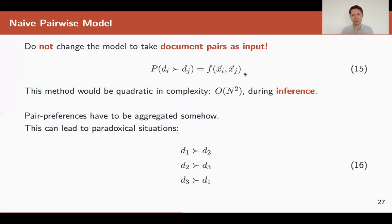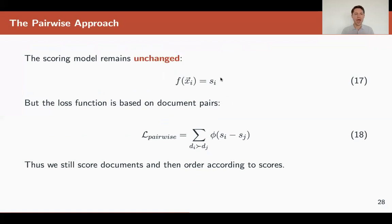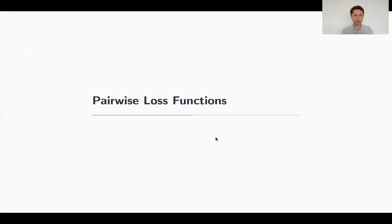Instead of taking two documents as input to the model, we can still have the scoring model unchanged. We still take a query document vector as input and predict the relevance score as output. So this is a pointwise model still—only one document, only one score—but the loss is pairwise. In the loss we have two documents, and the loss is a function of the differences.